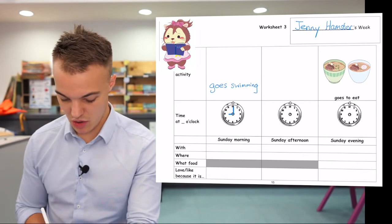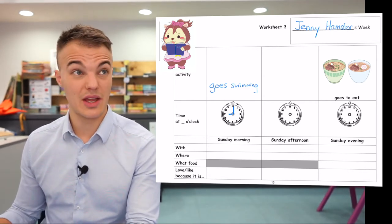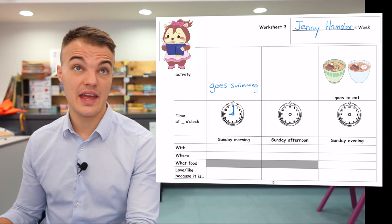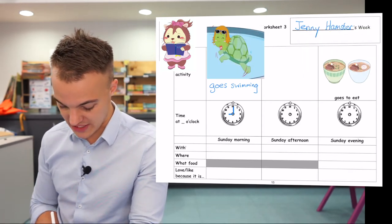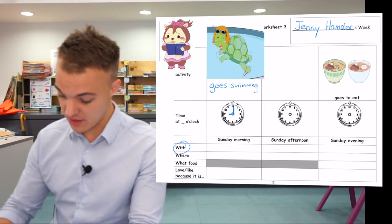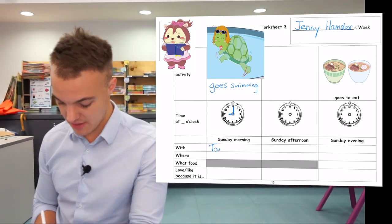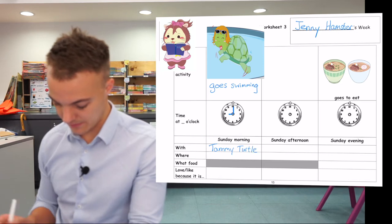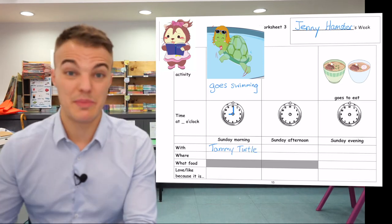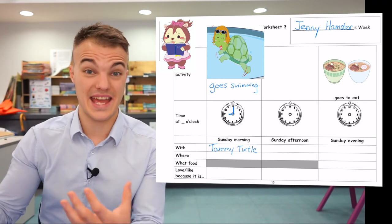Who does she go swimming with? I think she goes swimming with Tammy Turtle. So here where it says with, I can write Tammy Turtle. P2, remember to use big letters for a name.